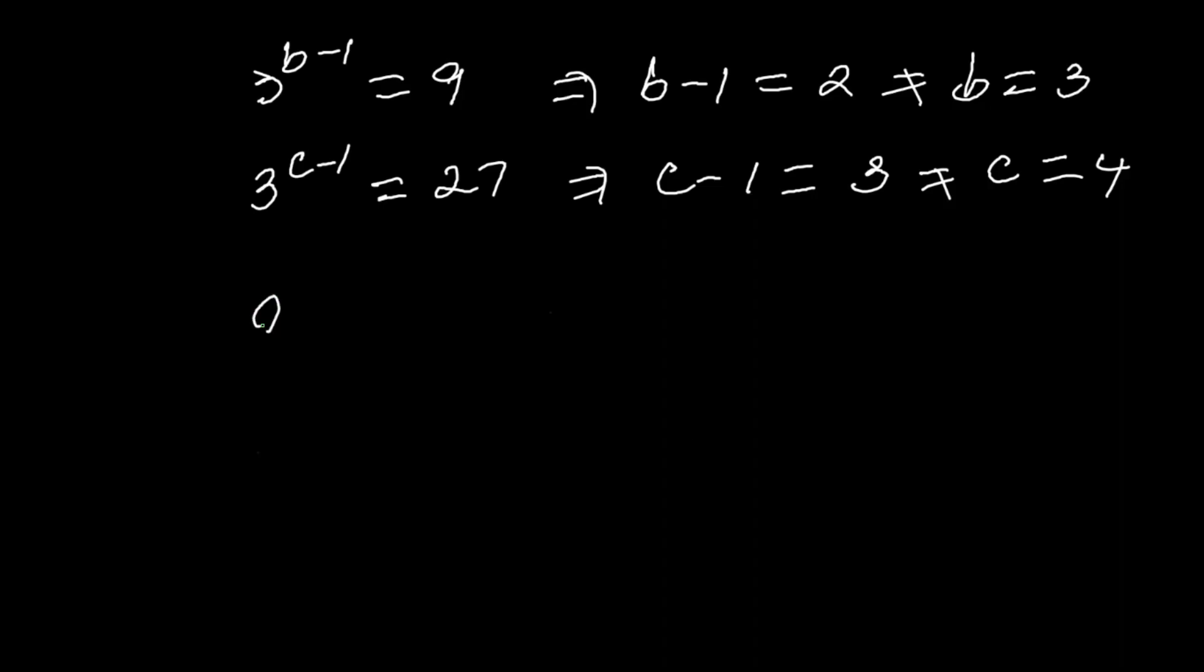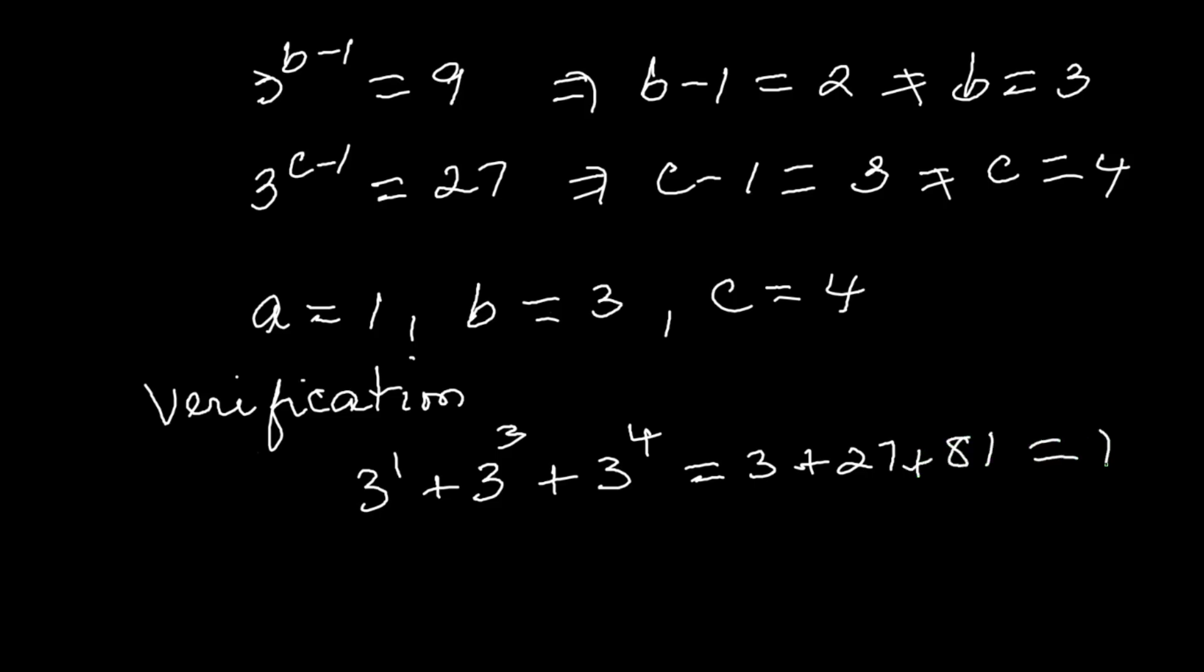We already know A equals 1. Check the original equation. 3 raised to the power 1 is 3. 3 raised to the power 3 is 27. 3 raised to the power 4 is 81. Add them together.